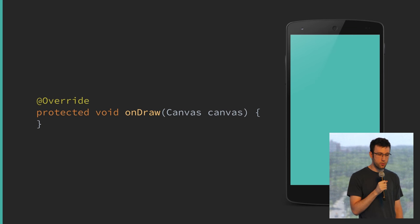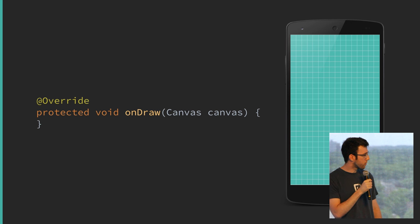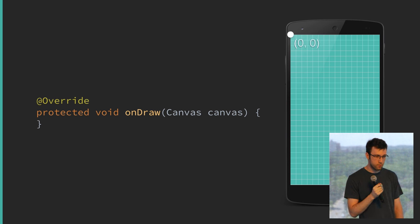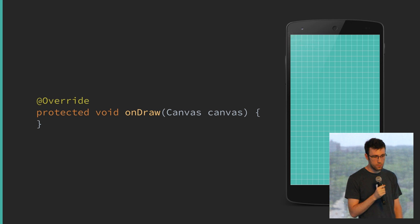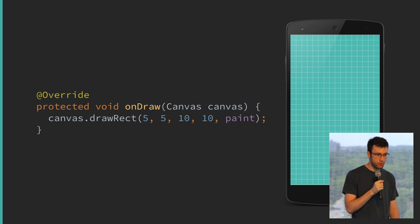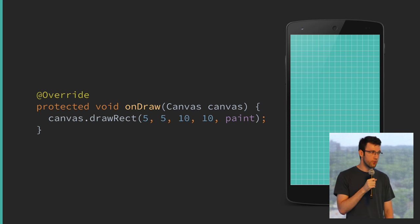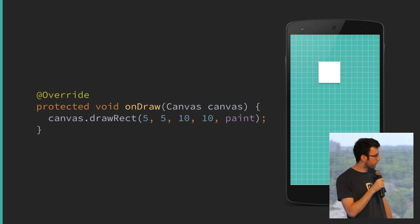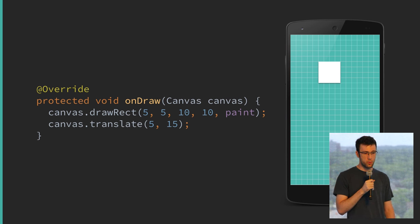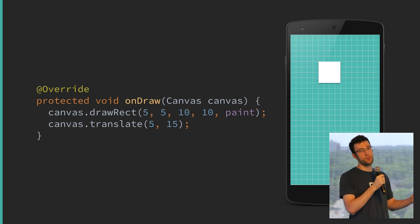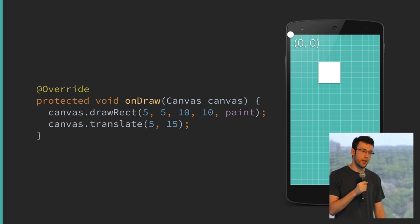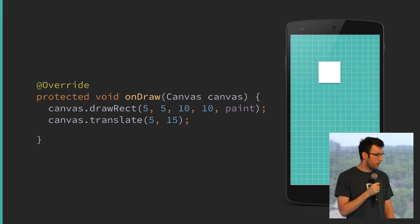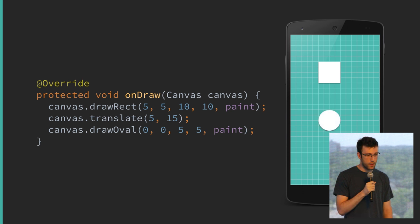Let's look at some examples. Here's your phone — it has a canvas. We're going to pretend the display has enormous pixels. Your origin is in the top left corner and it grows to the right and down. We're going to draw a rectangle at 5,5 going to 10,10 with a solid white paint. Now we're going to translate the canvas. Canvas transformations don't apply retroactively to things already drawn — they apply to future draw calls. So you're moving the origin, and the next oval draws at the new origin position.